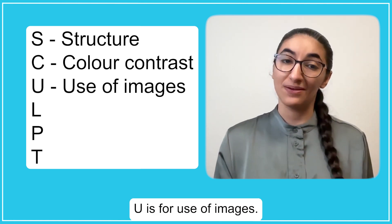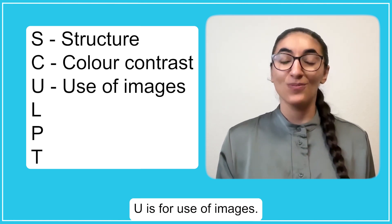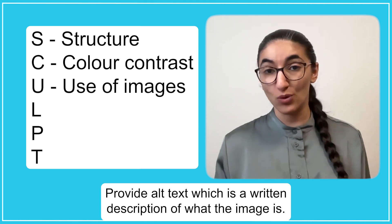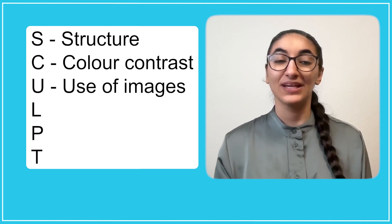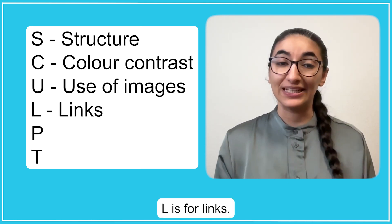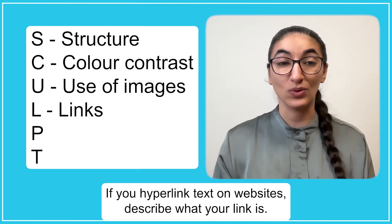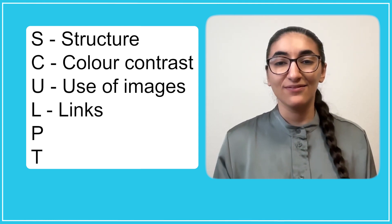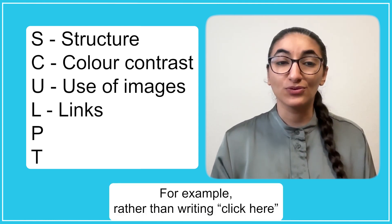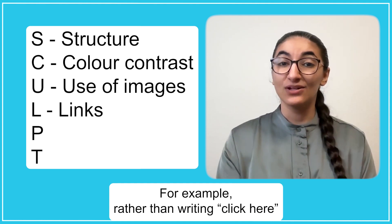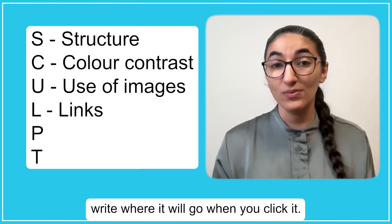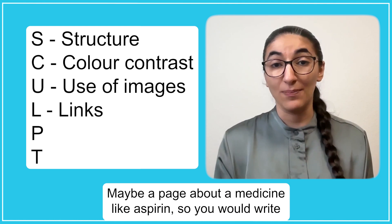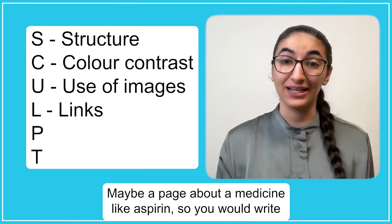U is for use of images. Provide alt text, which is a written description of what the image is. L is for links. If you hyperlink text on websites, describe what your link is. For example, rather than writing 'click here', write where it will go when you click it — maybe a page about a medicine, like aspirin.